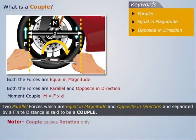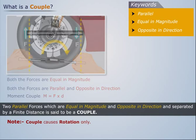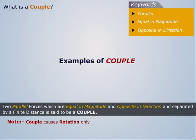Note that a couple causes rotation only. Some of the examples of couple are steering wheel.